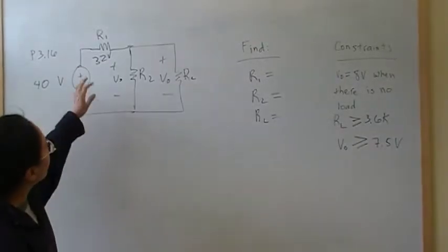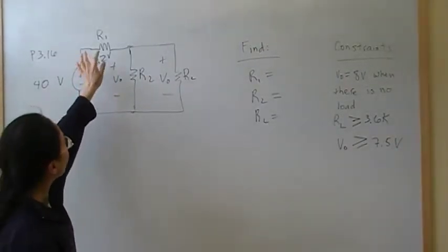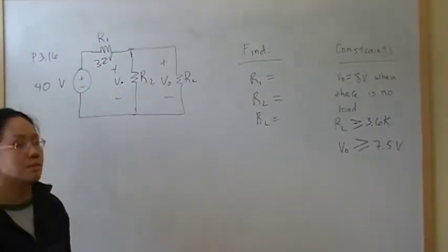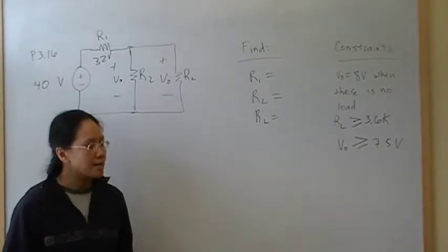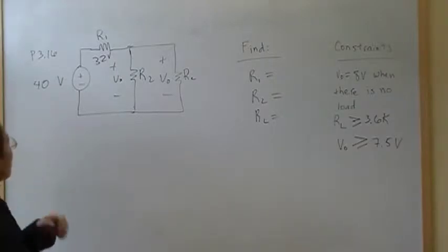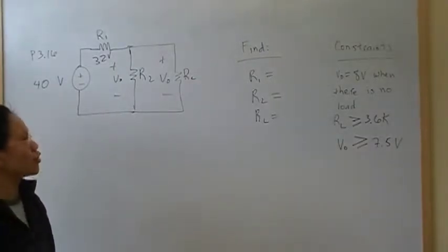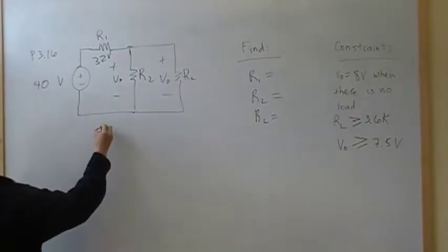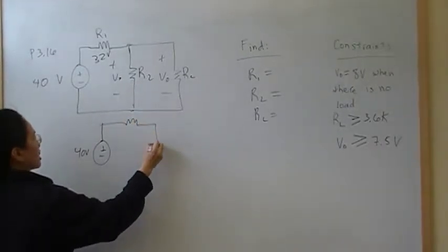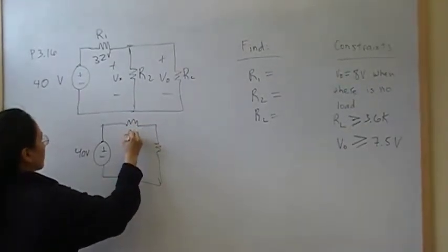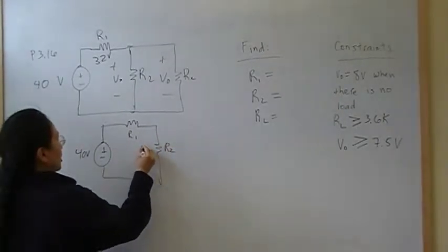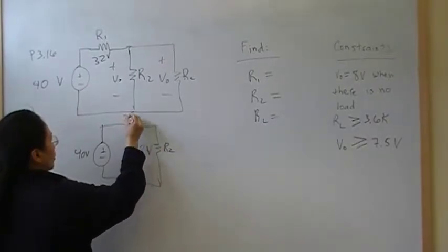Likewise, if you wanted 25% to drop, then you're going to design R1 and R2 such that R1 has 25% of the total resistance between R1 plus R2. And that's the concept of a voltage-divided circuit. So the way we're going to solve this is to start with the no-load constraint, which says that when there is no load, in other words, when the circuit looks like this, when it's just a straight voltage-divided circuit,